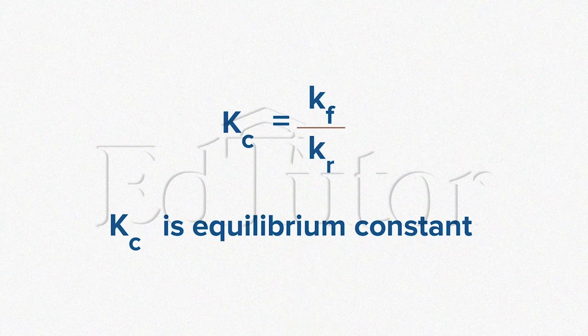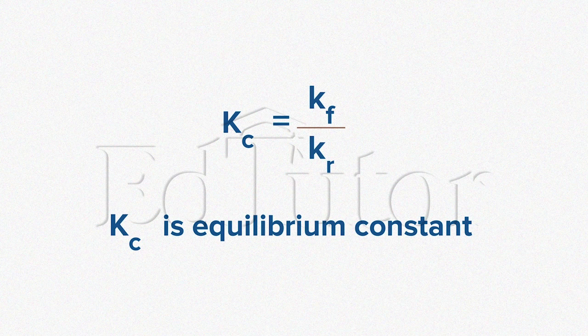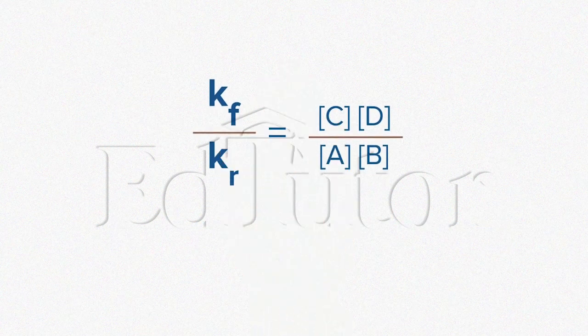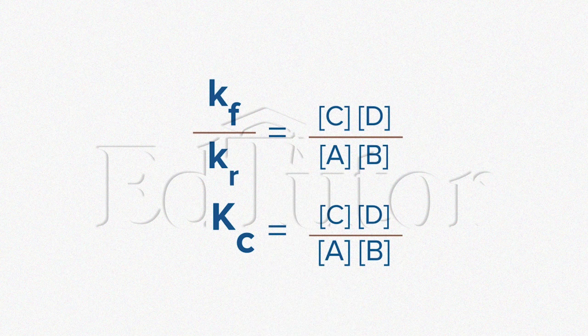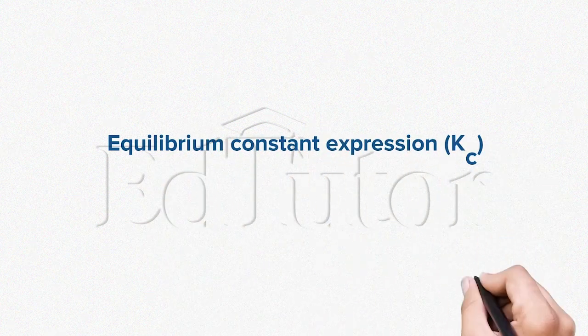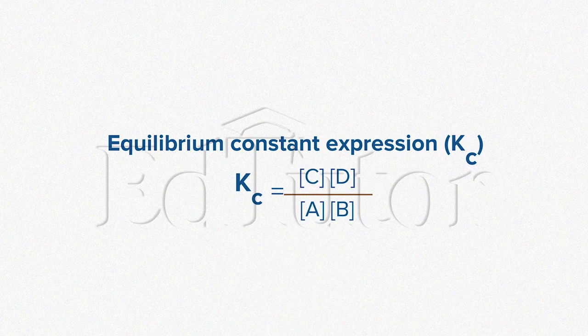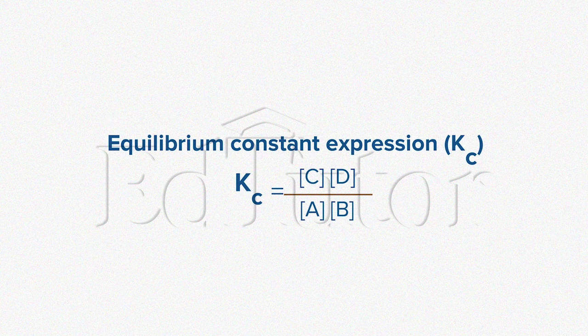We refer to KC as the equilibrium constant. Once we substitute KF over Kr with KC, we may represent this equation the following way. As you can see, we have now derived the expression for the equilibrium constant for the chemical equation.